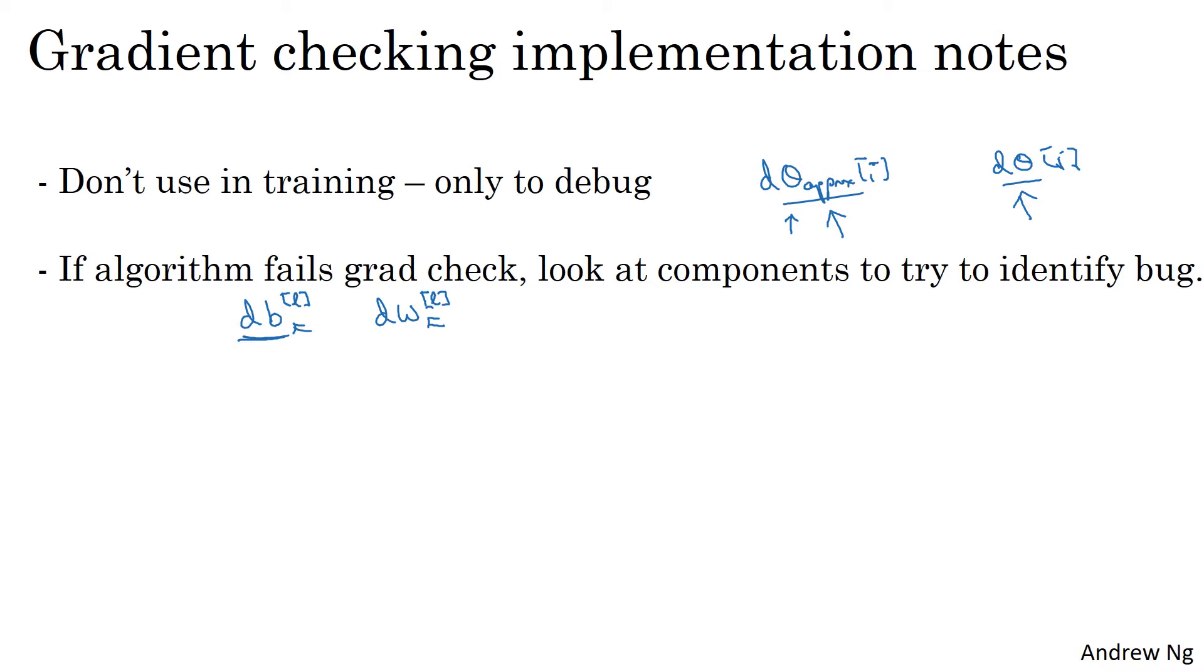And similarly, vice versa, if you find that the values from d theta approx that are very far from d theta, if you find that all those components came from dw or from dw in certain layers, then that might help you hone in on the location of the bug. This doesn't always let you identify the bug right away, but sometimes it helps give you some guesses about where to track down the bug.